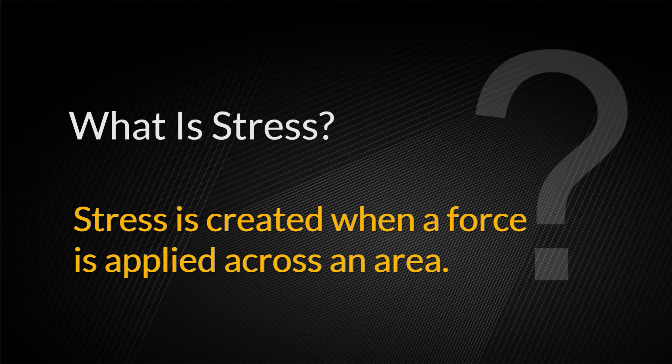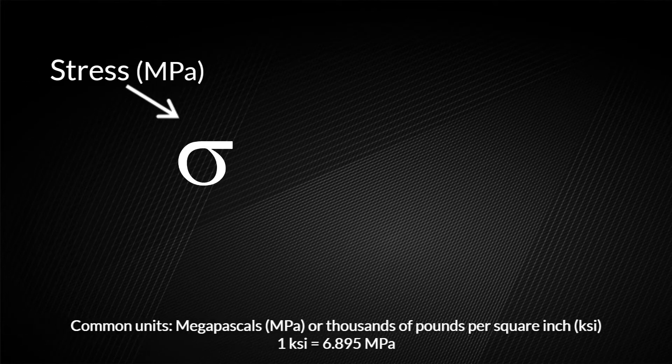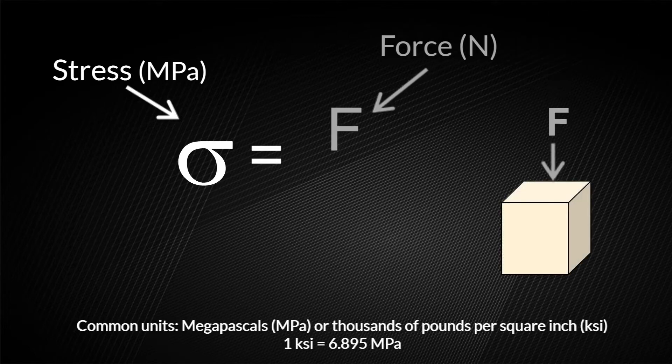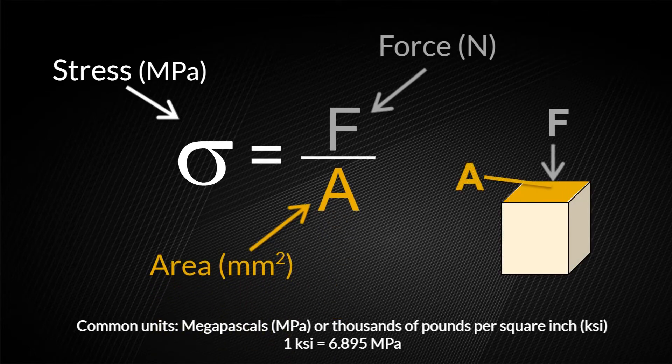Stress is created when a force is applied across an area. Stress is represented by the Greek letter sigma and is measured in megapascals or thousands of pounds per square inch. Stress is equal to force over the cross-sectional area of an object. There are two types of stress that can develop inside a material: normal stress and shear stress.